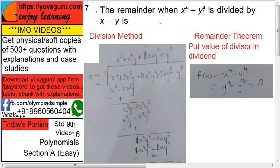When x raised to 4 minus y raised to 4 is divided by x minus y, we have done this. There are two methods to divide this: division method and remainder theorem. I have done this earlier, but again I am explaining. The best way is always to try remainder theorem, that's the easiest one.